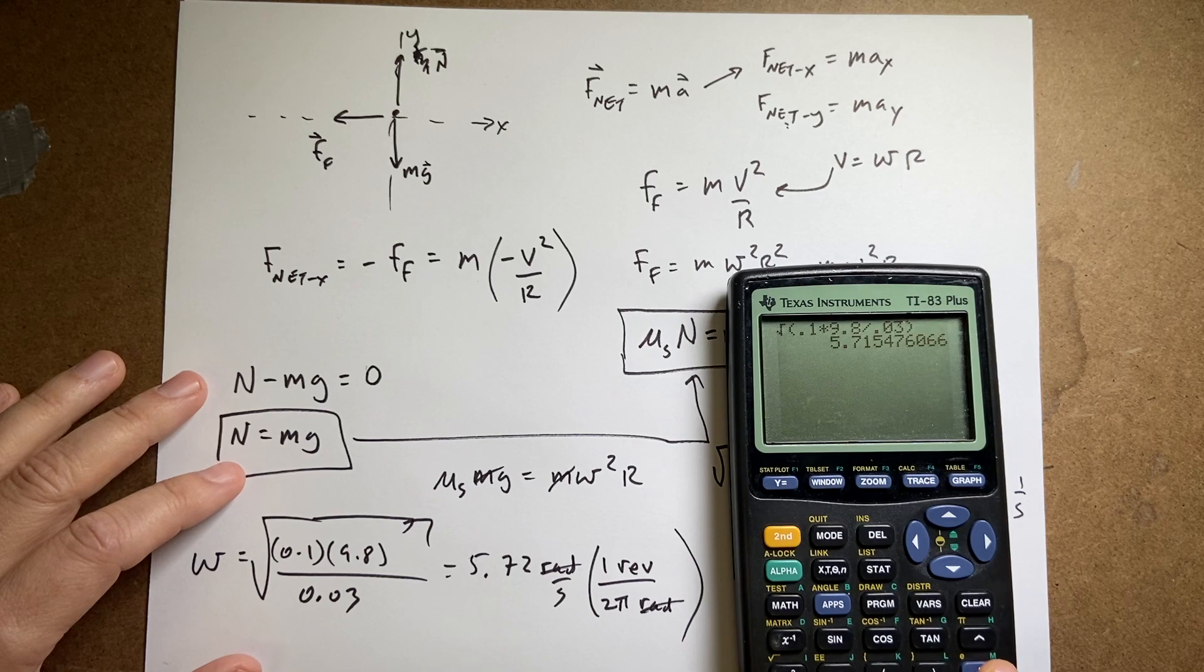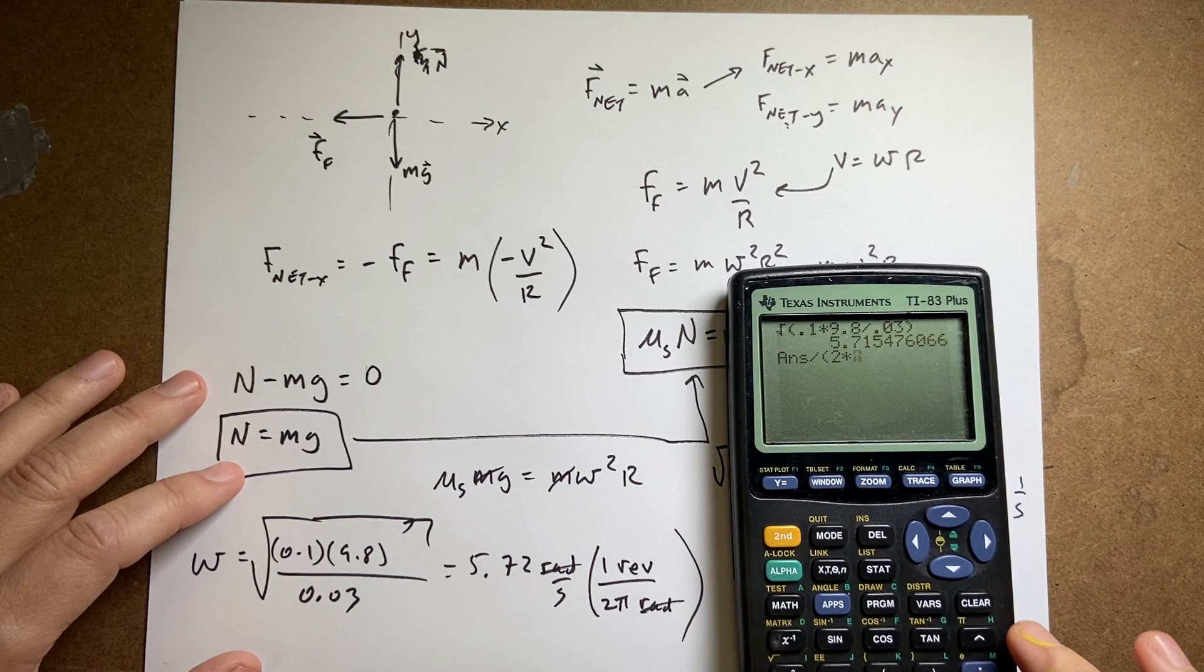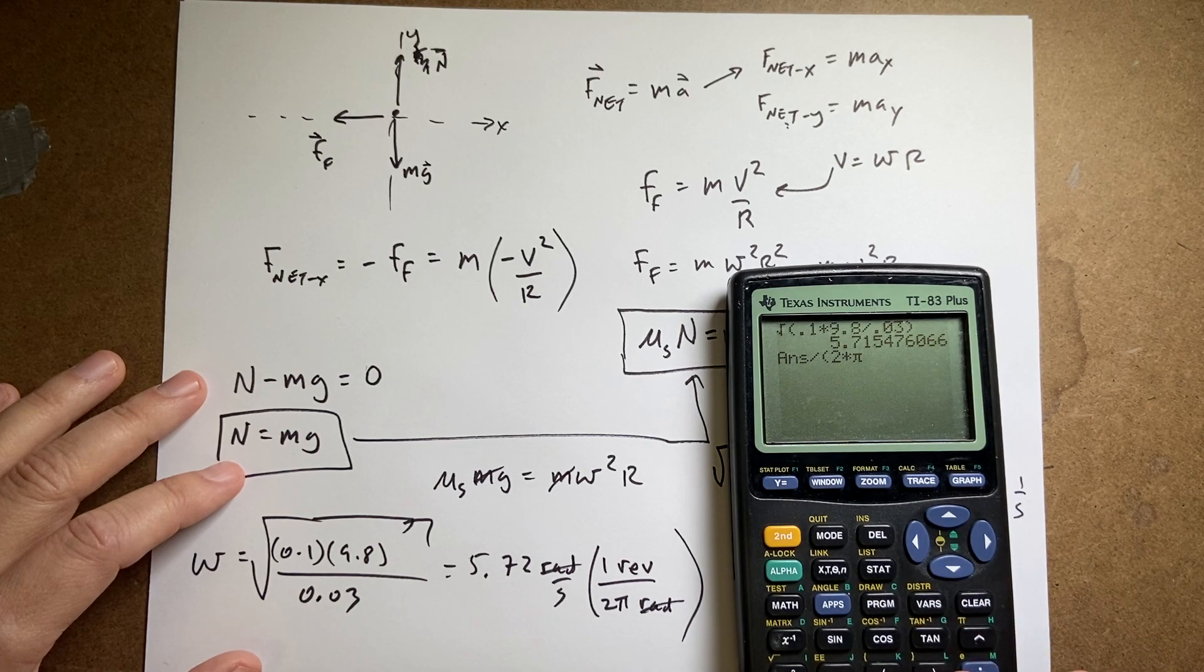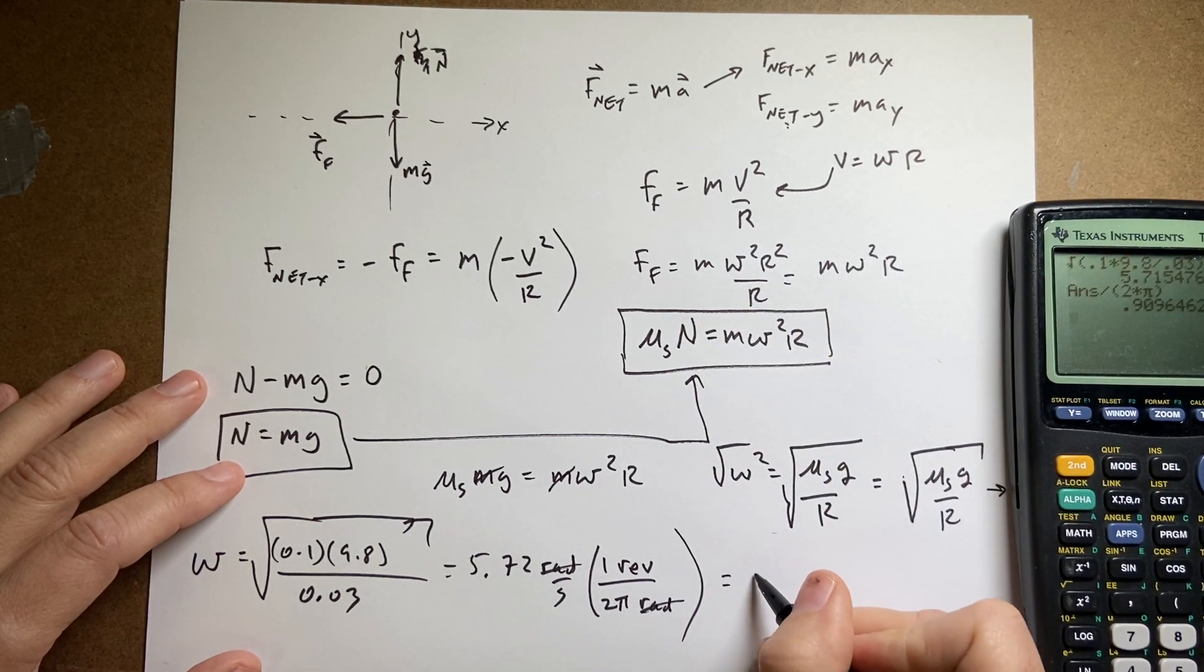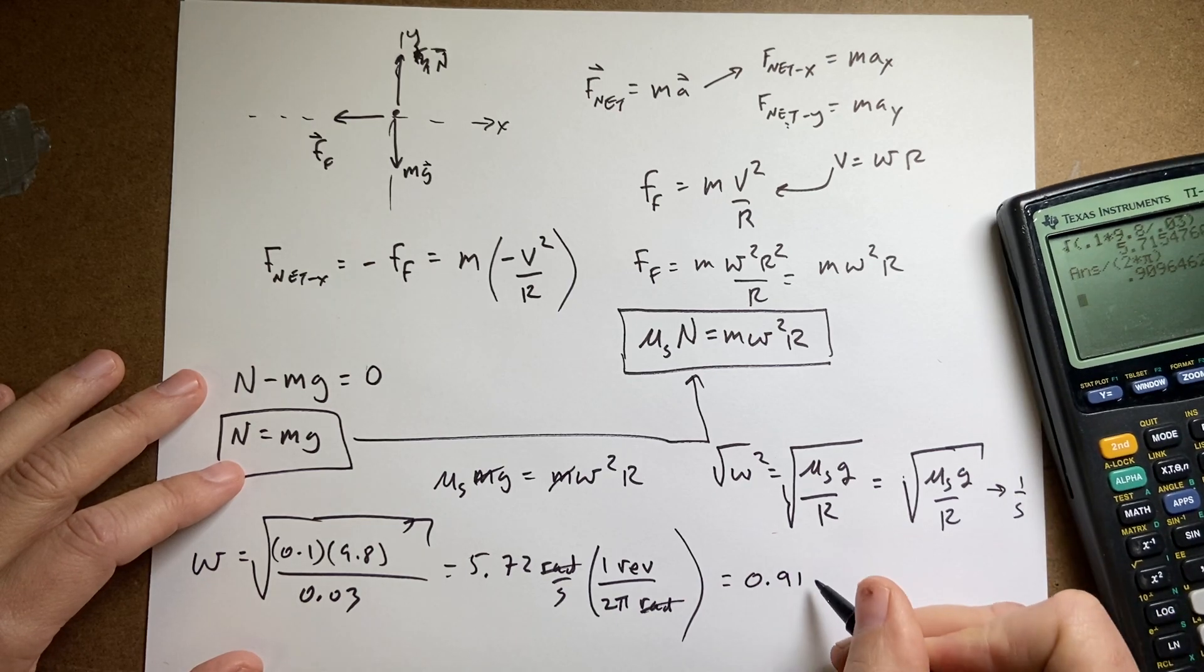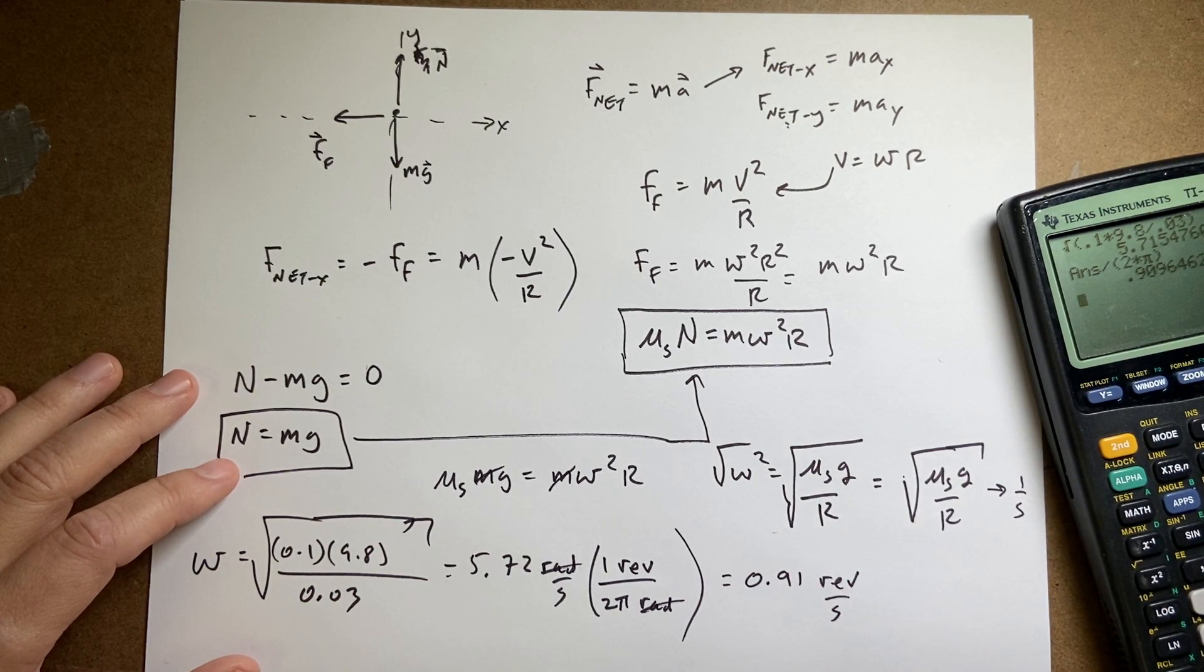Answer divided by 2 times, I really don't like this calculator. 0.91 equals 0.91 revolutions per second. And that's how you convert units.